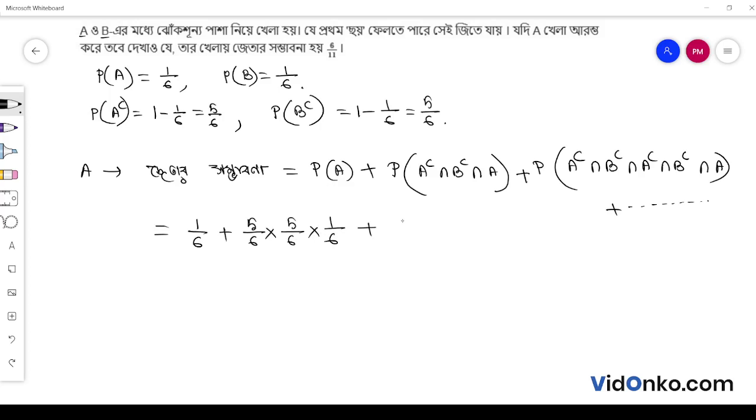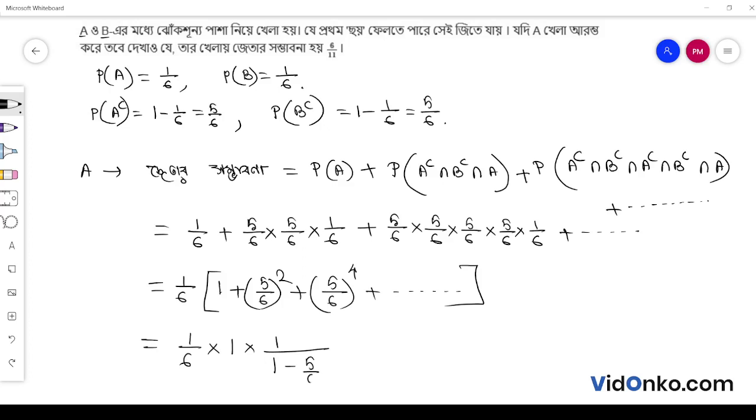So we get 1 over 6 times 1, and this equals 1 over 2 times 11 over 36, which gives us 6 over 11.